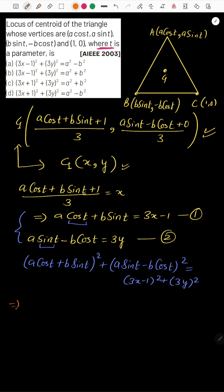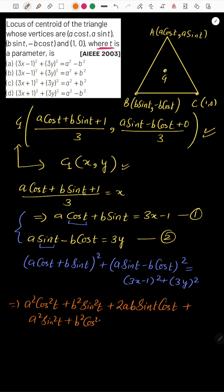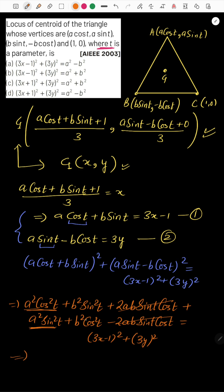Expanding the left side: the first square gives a² cos²t + b² sin²t + 2ab sin t cos t. The second square gives a² sin²t + b² cos²t - 2ab sin t cos t. The 2ab sin t cos t terms cancel. Then a² cos²t + a² sin²t = a², and b² sin²t + b² cos²t = b².